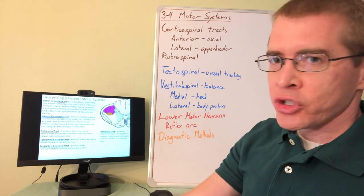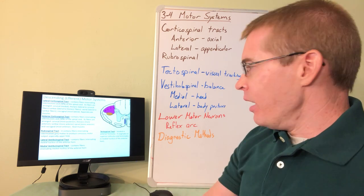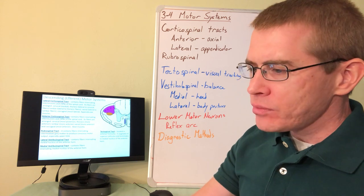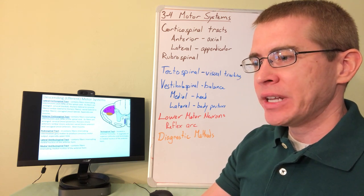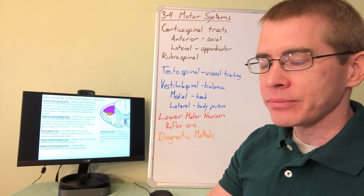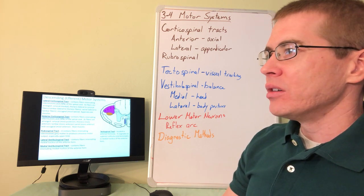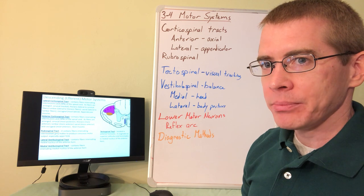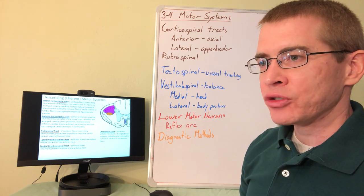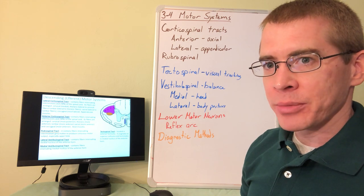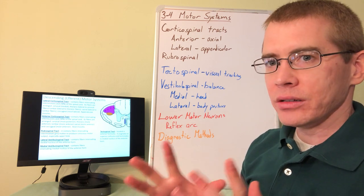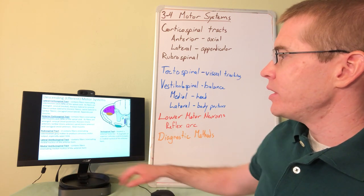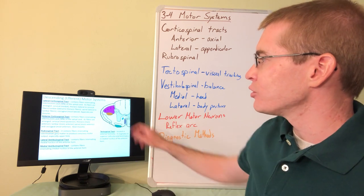The rubrospinal tract is an exception to the rule about conscious motor neurons. It originates in the red nucleus in the midbrain and controls some appendicular muscle fibers, especially of the upper limb. However, the rubrospinal tract does receive innervation from upper motor neurons, so it somewhat breaks the rule. We also have the vestibulospinal tracts and the tectospinal tract.